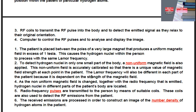The hydrogen nuclei spin, and the precession rate — the angular velocity omega — is proportional to the strength of the magnetic field. The stronger the field, the greater the angular speed of precession. As the non-uniform magnetic field is changed together with the radio frequency emitted, hydrogen nuclei in different parts of the patient's body are located. Radio frequency pulses are transmitted to the person by means of suitable coils.